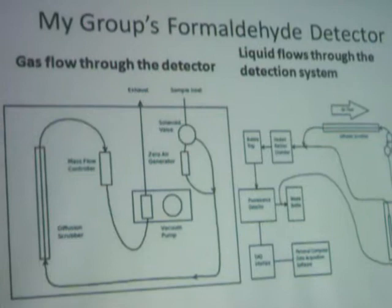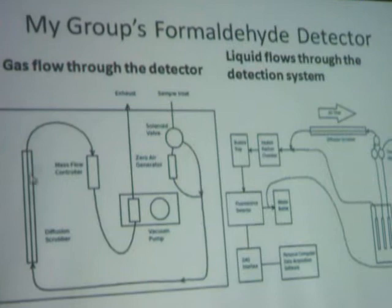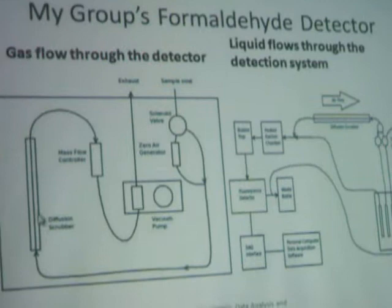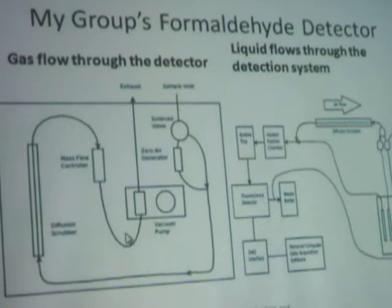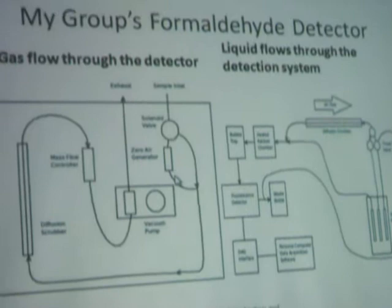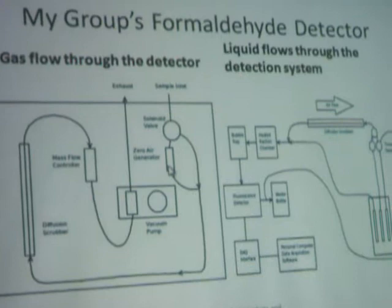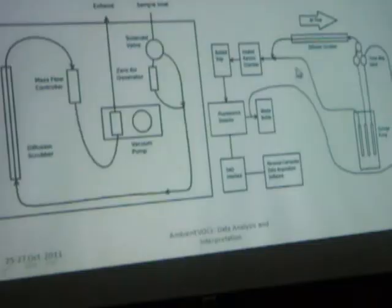Our group has been working on developing a system like this for several years. This shows the way the gas is sampled. We sample the air through a diffusion scrubber, transferring formaldehyde from the gas phase into the liquid phase. We measure the flow rate of the gas passing through the system. We can also remove formaldehyde by passing air through a carbon scrubber before the diffusion scrubber. We cycle back and forth between ambient air and zero air — 10 minutes on, then the zero period — to establish a baseline relative to the background.